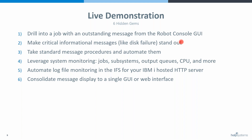You can take standard message procedures and automate them to call a program or reply specifically. We're going to look at how to leverage system monitoring — your typical checklists at shift change — to check critical jobs, critical subsystems, and whether your output queues are getting too large. Most people use them for job queues.